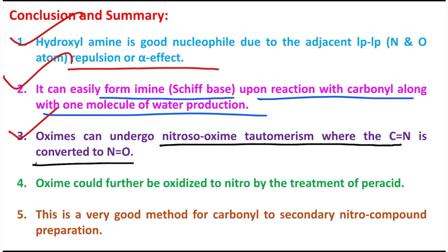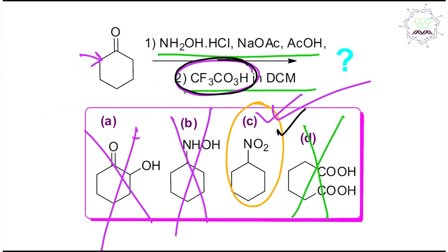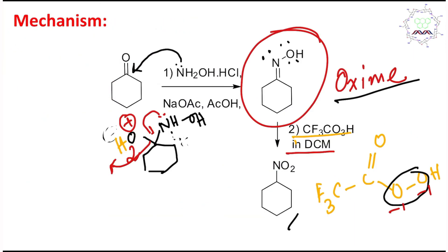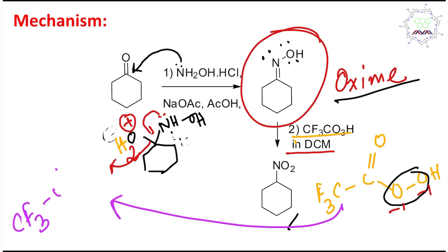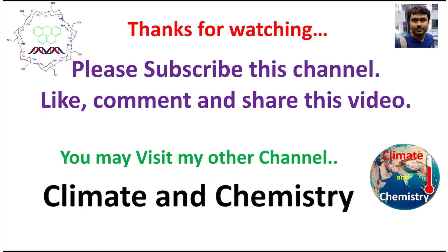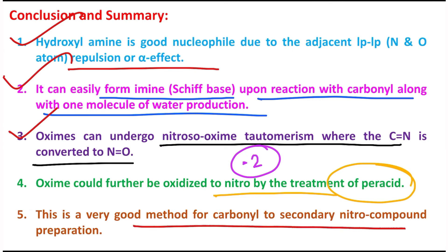The oxime can further be oxidized to a nitro compound by treatment with peroxy acids, which are very strong oxidizing agents. This is because peroxy acids contain an O–O peroxy linkage with a −1 oxidation state, and the stable oxidation state of oxygen is −2, so the peroxy acid acts as an oxidant and is itself reduced. In this reaction, trifluoroperoxyacetic acid is converted into trifluoroacetic acid (CF₃COOH). This is a very good method for converting a carbonyl compound into a secondary nitro compound.